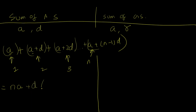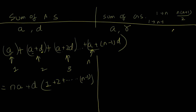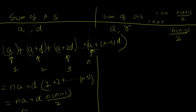The d coefficients are 0, 1, 2, up to n minus 1. Adding numbers from one to n minus 1 gives n(n minus 1) divided by 2 — because the standard formula for one to n is n(n+1)/2, but here the top value is n minus 1, so n gets replaced and n plus 1 becomes n. Therefore my formula becomes n·a plus d times n(n minus 1) over 2.